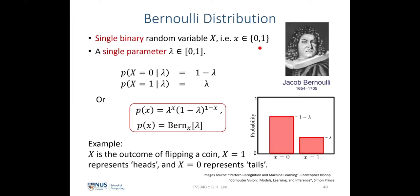This distribution is parameterized by a single parameter lambda, which takes a range of 0 to 1. The probability of X equals 0, conditioned upon the parameter, is equal to 1 minus lambda, where lambda is the hyperparameter between 0 and 1. And the probability of X equals 1 is equal to lambda itself. Since X takes only two states, the total probability is 1 minus lambda plus lambda, which equals 1, making it a valid probability.